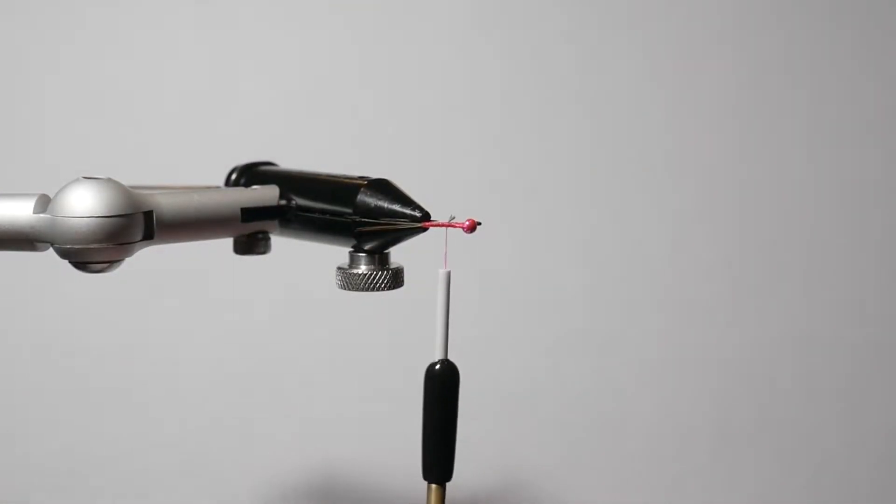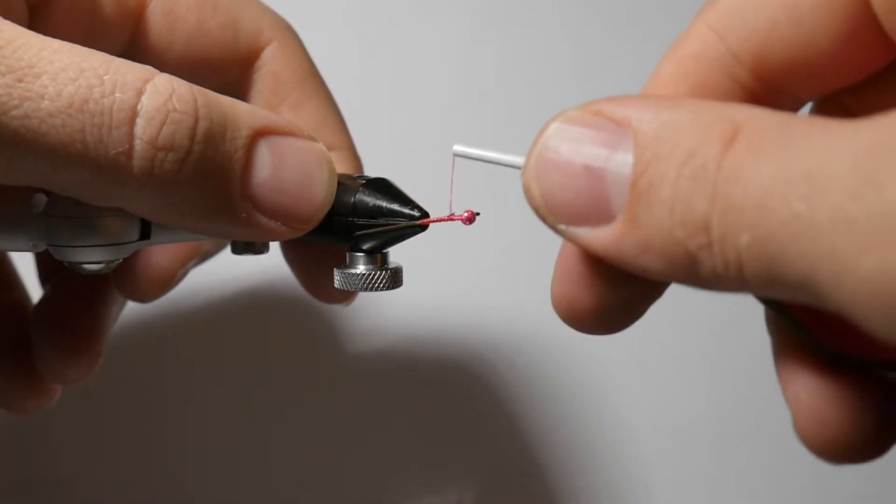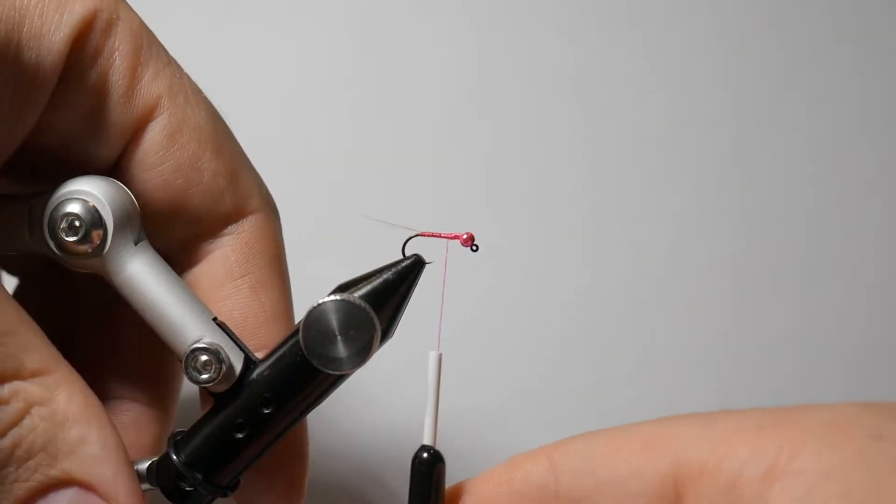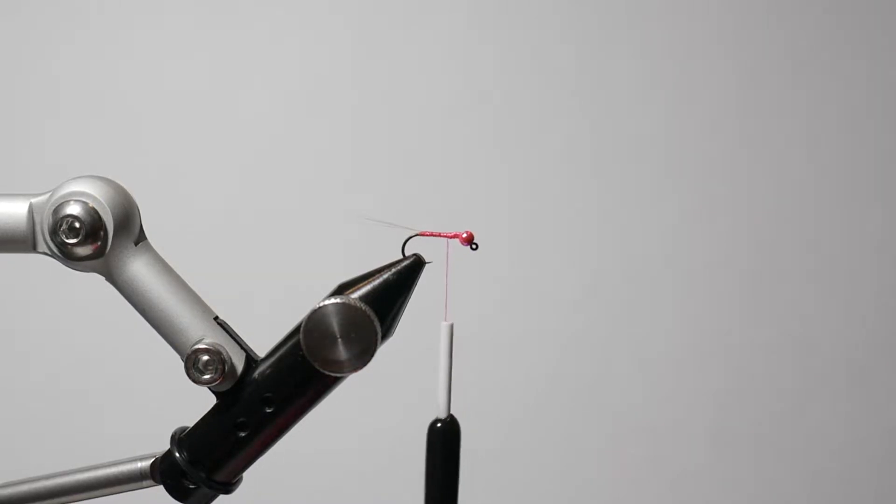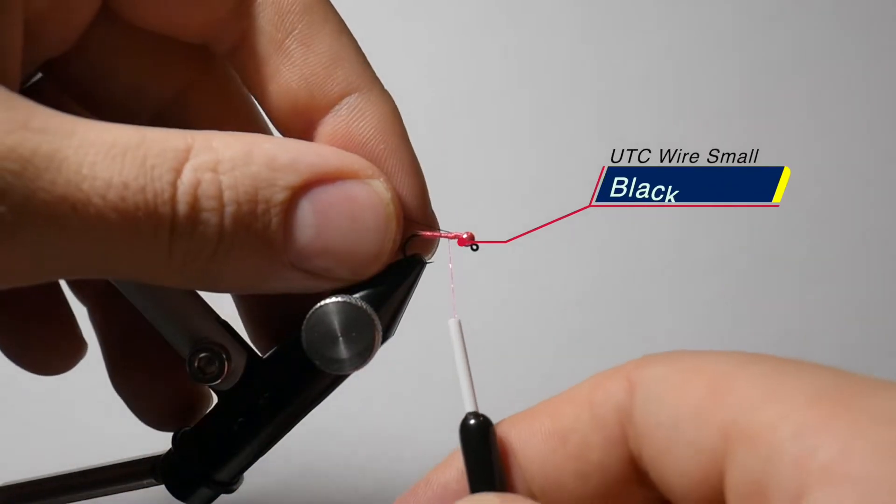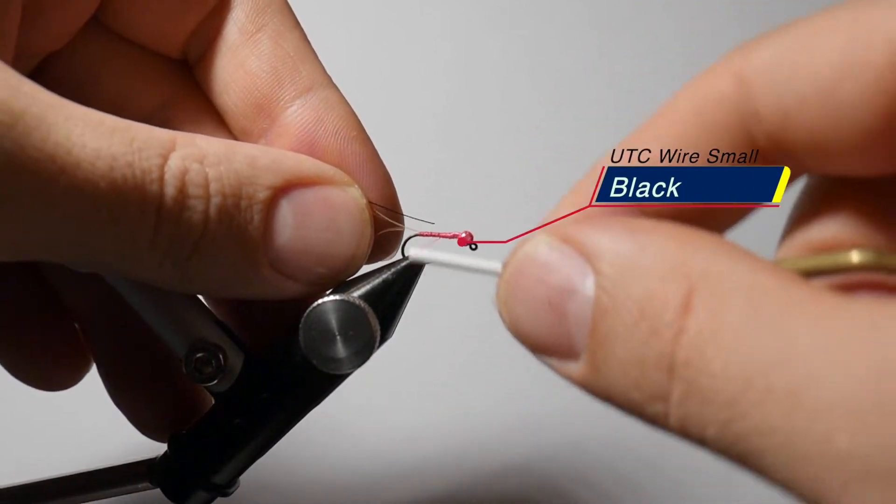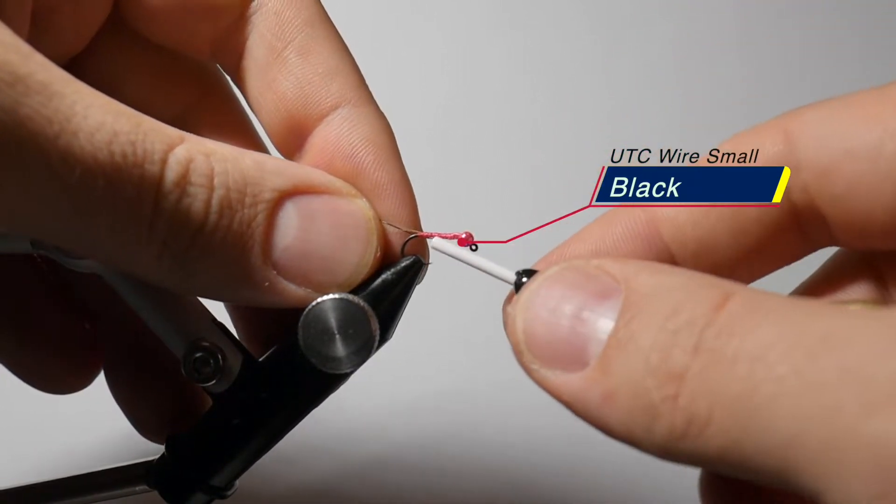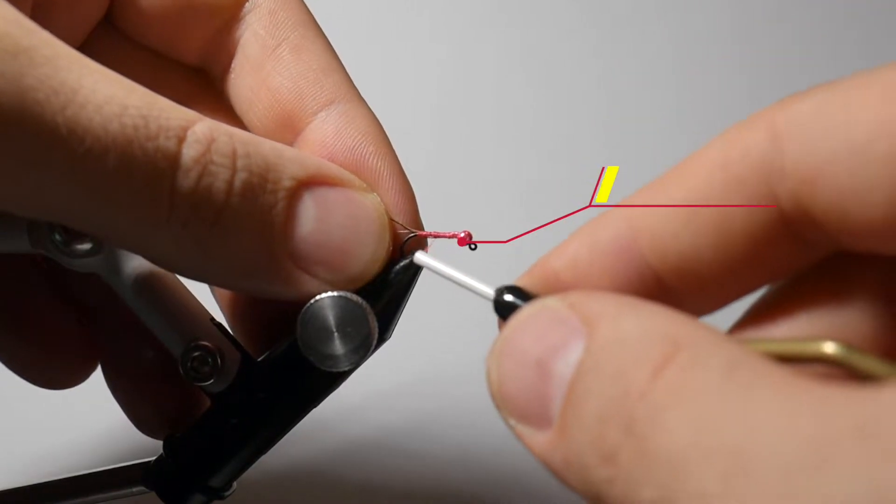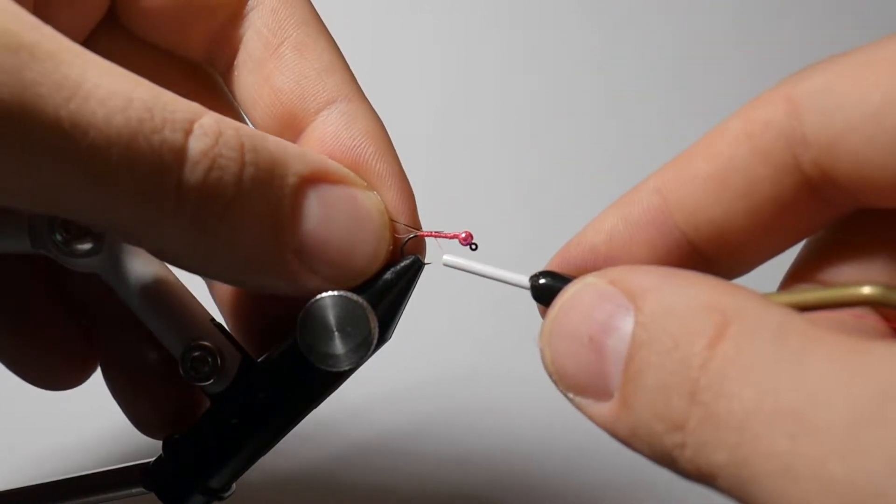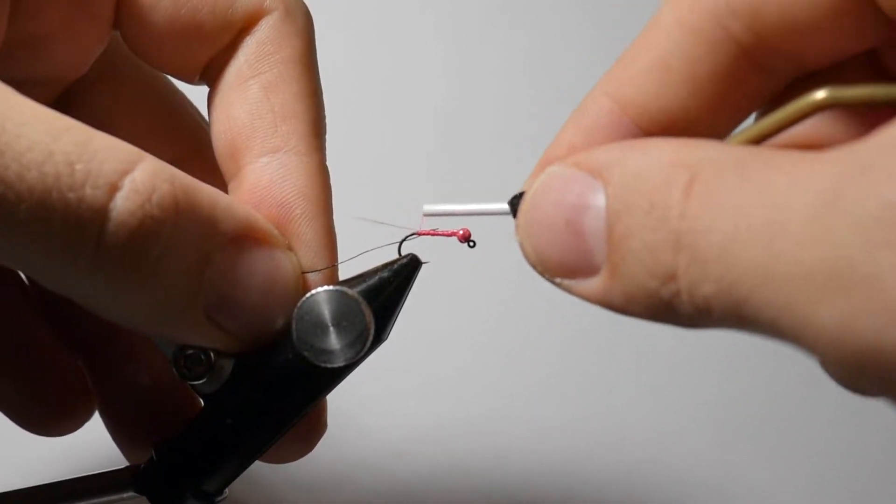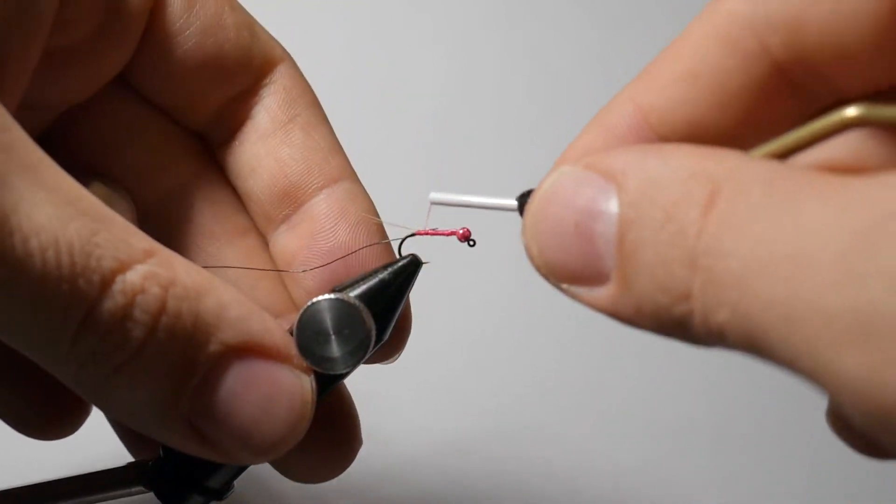I'll roll the fly over and just quickly snip out those butt ends. Doesn't have to be perfect on that part, but just kind of snipping them out there and then folding down the rest. Then what I want to do is take a small black UTC wire, and I am going to work this pink back to just about three quarters mark. Then we are going to tie that in on the far side of the hook.